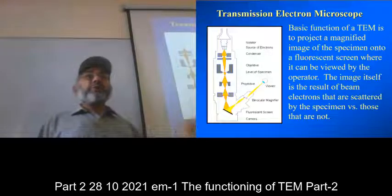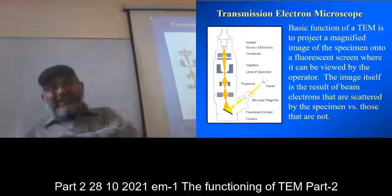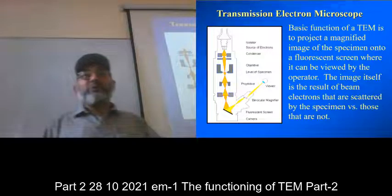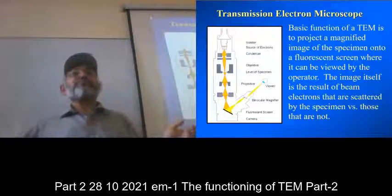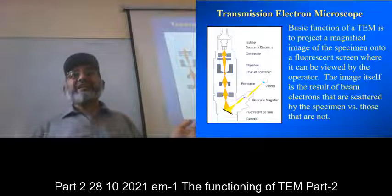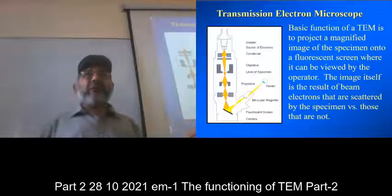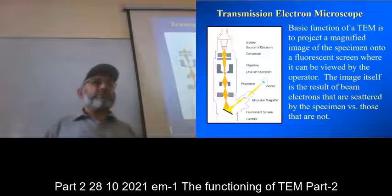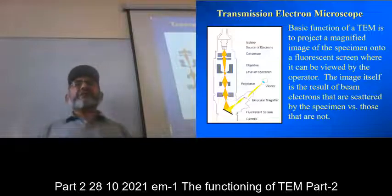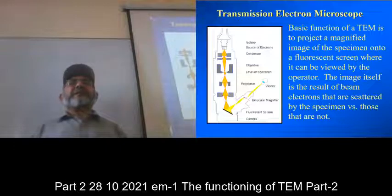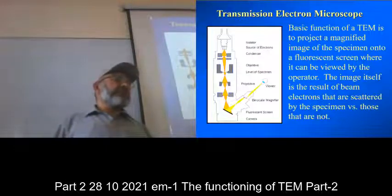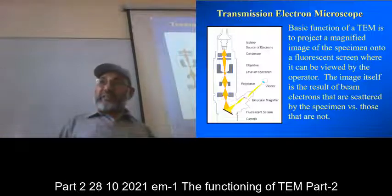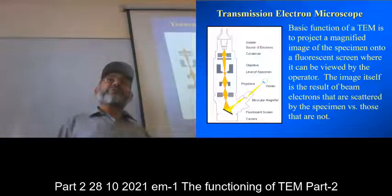That lambda is dictated by the accelerating voltage, and the voltage is in your hand - you can increase or decrease it. Nowadays people are using very high voltage electron microscopes. In the old days when I was studying, the maximum accelerating voltage was 300 keV. 300 keV is also not a small thing - 300,000 electron volts - so it is a huge voltage and the beam is very highly energetic.